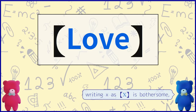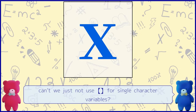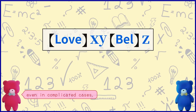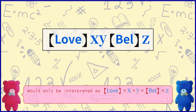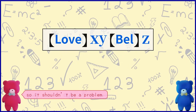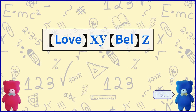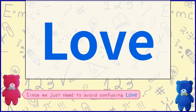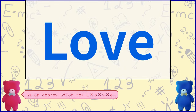By the way, Belchan teacher, writing X with parentheses and corners is bothersome. Can't we just not use parentheses with corners for single character variables? That's true. Writing single character variables just as X, even in complicated cases, would only be interpreted as A times X times Y times Y times Z. So it shouldn't be a problem. But writing 'love' with parentheses and corners is still bothersome.